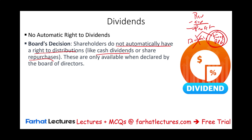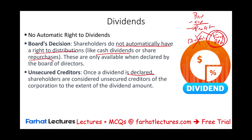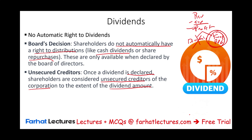Once a dividend is declared, that declaration creates a liability for the company. The shareholders become unsecured creditors for the corporation to the extent of the dividend amount. For example, with 100,000 shares and a declared $1 per share, there is a dividend payable of $100,000. This situation is unusual unless the company declares bankruptcy after declaring dividends, like Enron — but typically, when a company declares dividends, they are making a profit and have the cash.